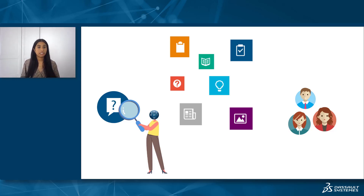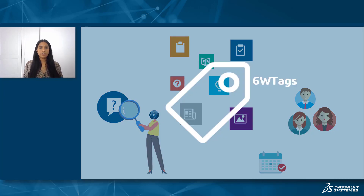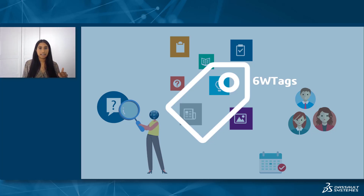There is another factor that we need to take into account, which is the date when it has been published. Like if you want to find content that has been published 2 years ago, that's going to be a lot of scrolling down. But if you want to look for content that has been published 2 minutes ago, that will be easier. So let me introduce you to the tool 6W Tags, that will really help you find your content in the best way possible. 6W Tags is a tool that allows you to filter your content with several tags, and you can select the one you're interested in to find the right content you are looking for.